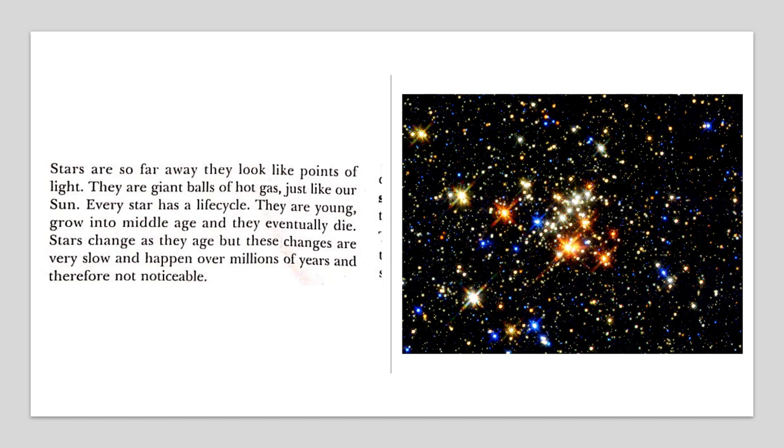Every star has a life cycle. All stars including the sun have a life cycle. They are young, grow into middle age, and eventually die. Stars change as they age, but these changes are very slow and happen over millions of years and therefore are not noticeable. The changes are very minute and take millions of years, so we are not able to notice those changes.